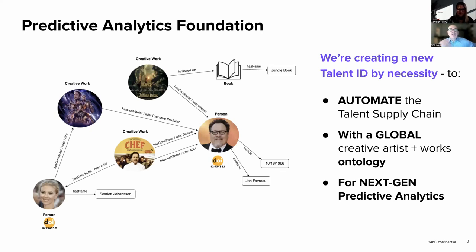To create this predictive analytics business for talent, as we dug into it, we realized we had to create a talent identity by necessity to automate that talent supply chain globally, and to build it into a true creative artist and works ontology. Only then would we feel we had the foundational layer for predictive analytics. On screen here is a creative works ontology from MovieLabs — Motion Picture Laboratories — showing an example of John Favreau and Scarlett Johansson and how they're connected, with just one or two degrees of separation because they interoperate in the Marvel Universe.